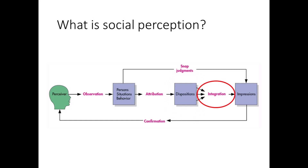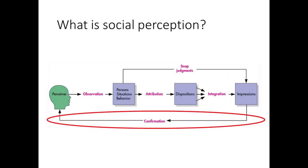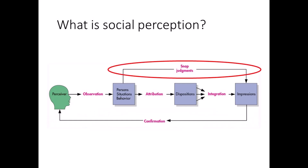Then we put it all together through integration to form an impression of the target. First impressions tend to be difficult to change, as we often look for and pay attention to information that confirms our initial impression. Sometimes we skip attribution and integration and make snap judgments of the target based on the little information we've collected up until that point.